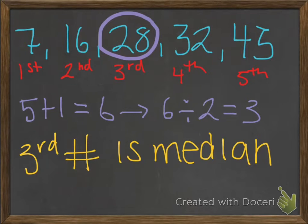Then, you divide the sum by 2. 6 divided by 2 equals 3. This means that the third number is our median. The third number in our data is 28.